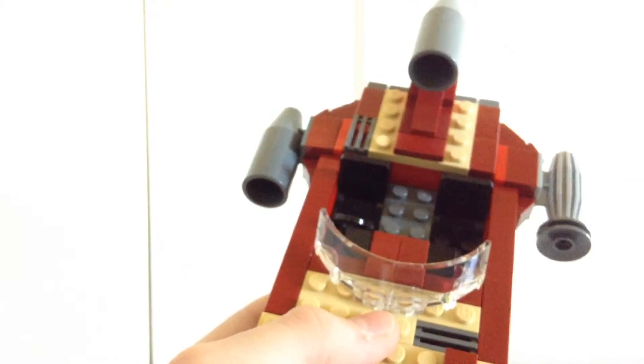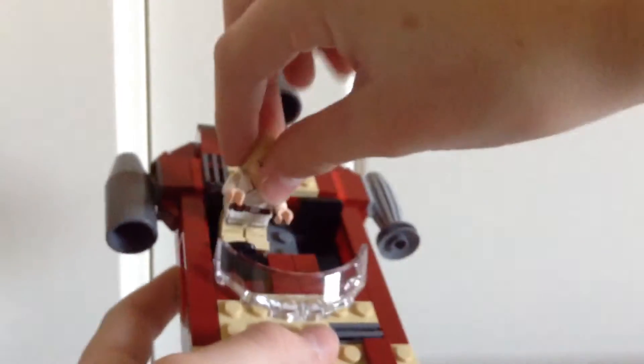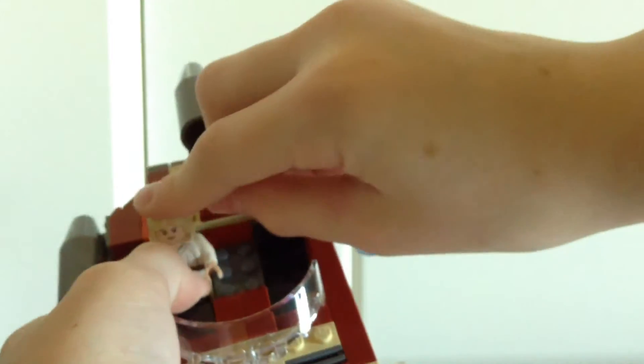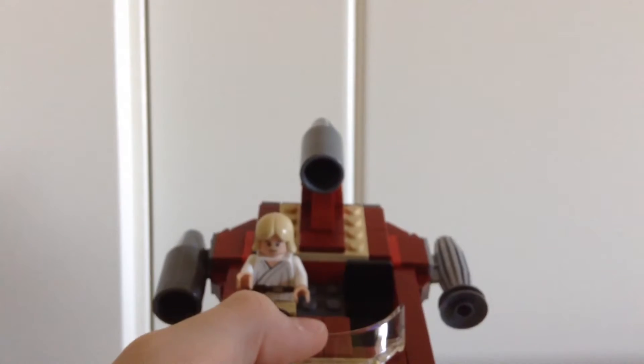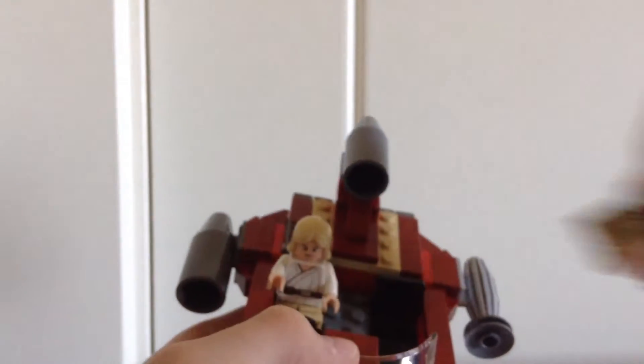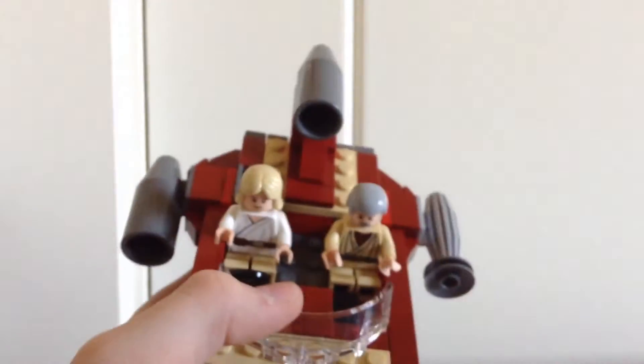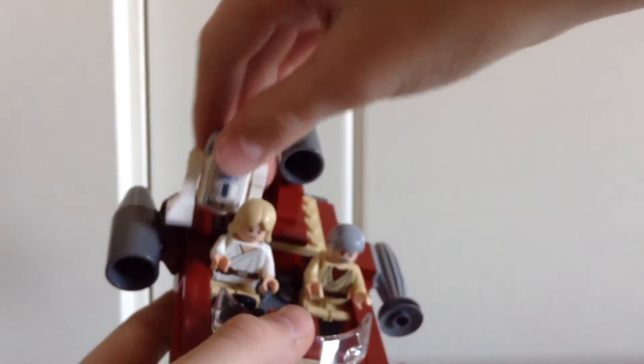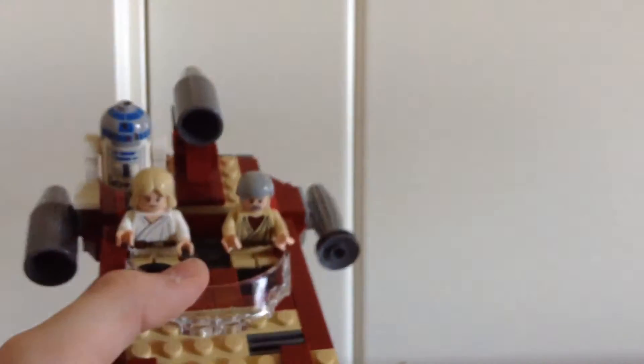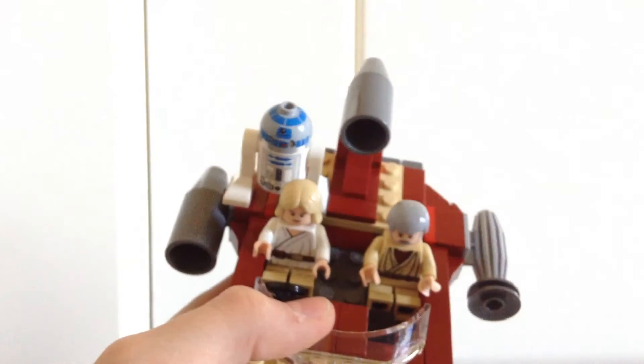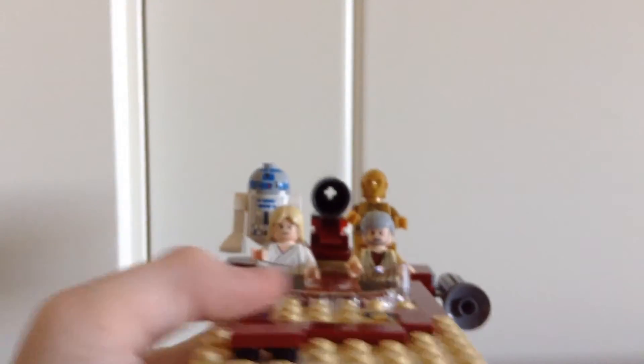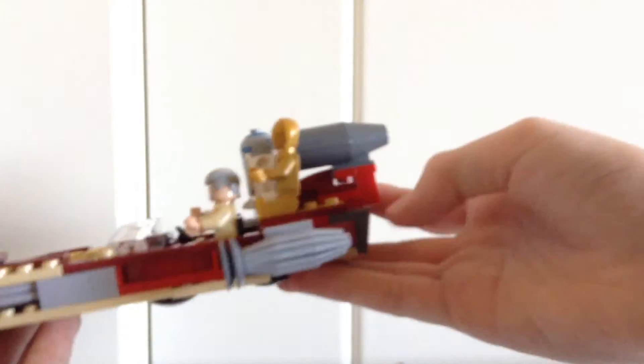And so, if I just take Luke, you can put him in the driver's seat. Just like that. Then put Ben, or Obi-Wan, in the passenger seat. And then you can take R2-D2. And you can put him just right there. You don't really have places for the droid. So, you just kind of throw them back here. Then you can set C-3PO right there. So, you can have all of them just riding along in the Landspeeder.